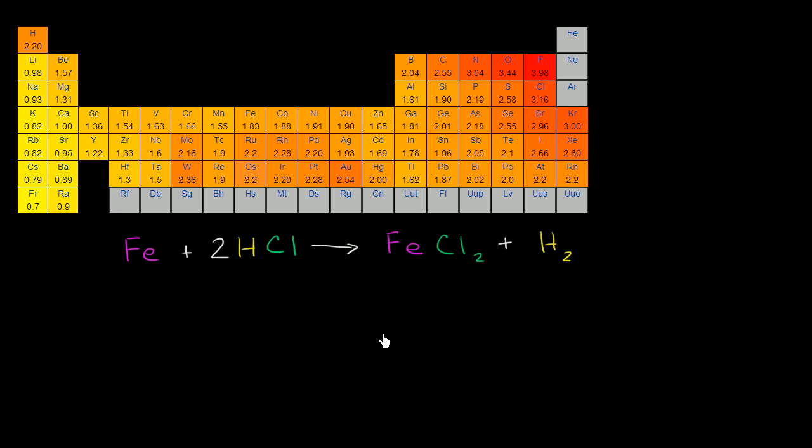So I'm assuming you've given a go at it. So let's think about it. So right here, this iron, it's not bonding to anything. So there's no reason that its electrons are going to gain or lose electrons in our hypothetical oxidation state world. So it has an oxidation number of 0.